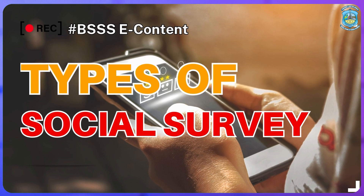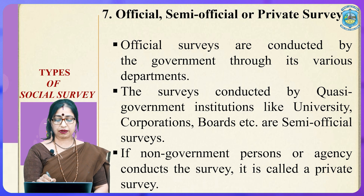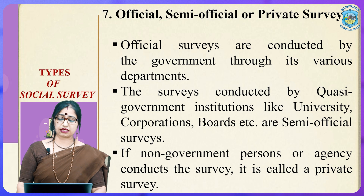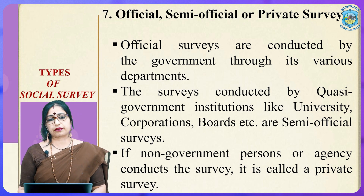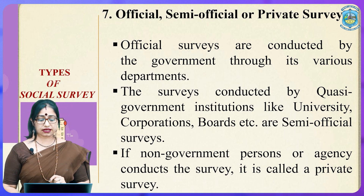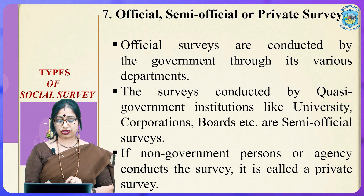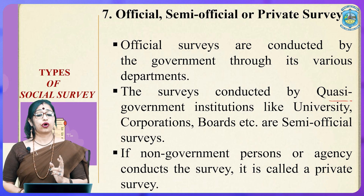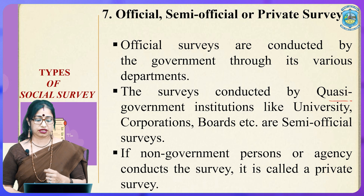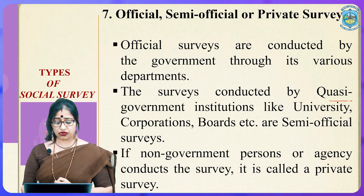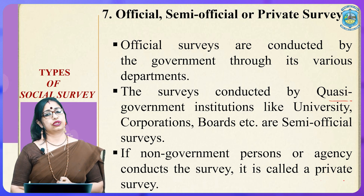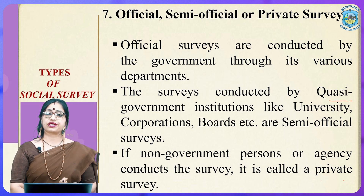The next type is official, semi-official, or private surveys. Official surveys are conducted by the government through its various departments or institutions. Surveys conducted by quasi-government institutions like universities, corporations, boards, etc. are termed semi-official surveys. If non-government persons or agencies conduct the survey, it is known as a private or business survey.